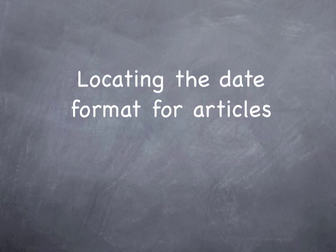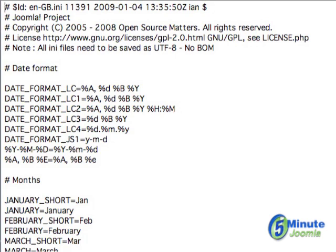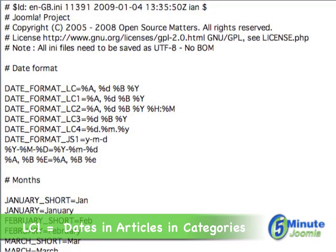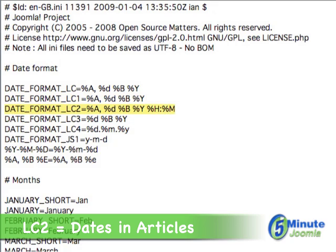Now you'll notice that there are many different date formats. They have LC, LC1, LC2, LC3, LC4 and then others as well. The two that you should be most concerned with are LC1, which will change article dates in categories, and LC2, which will actually change dates in articles themselves.